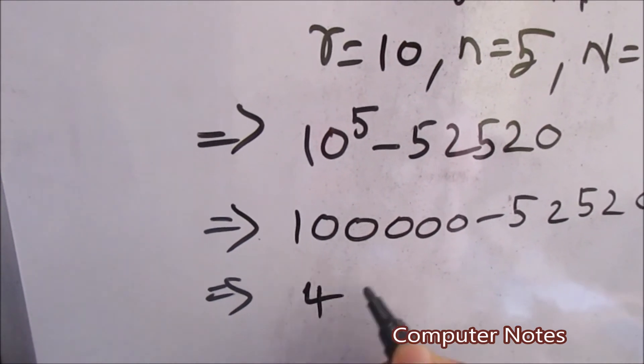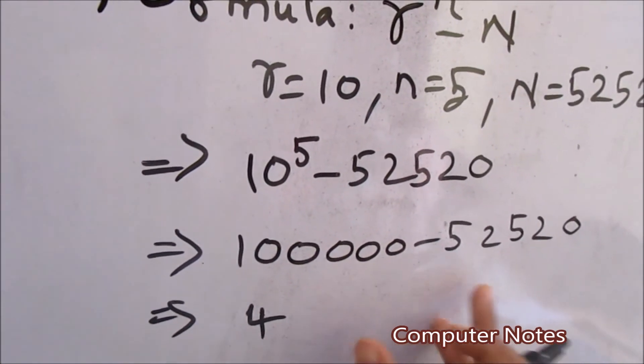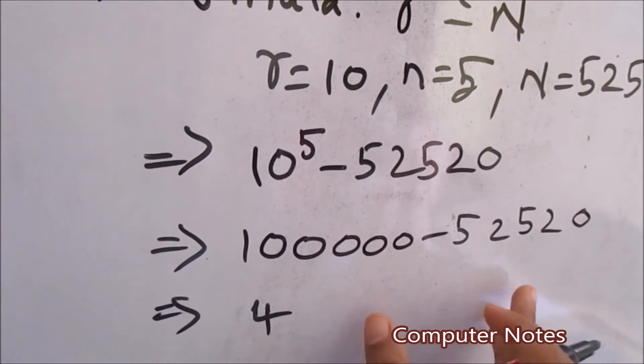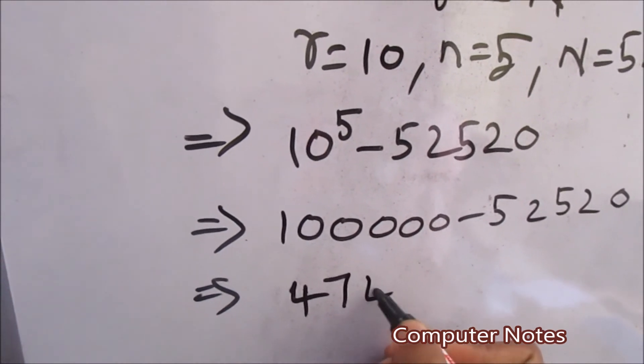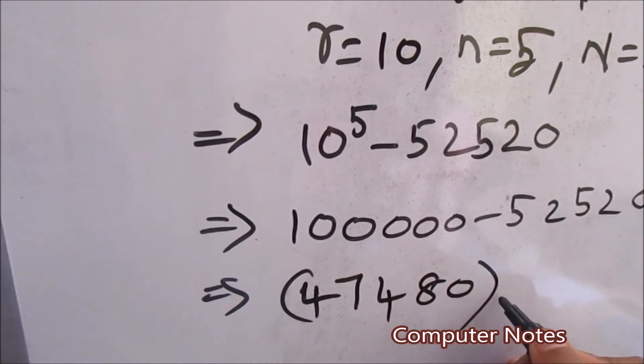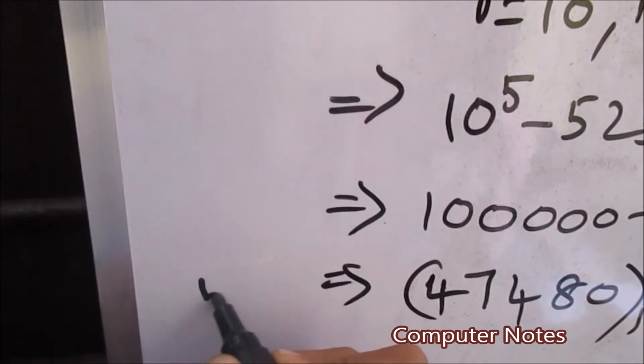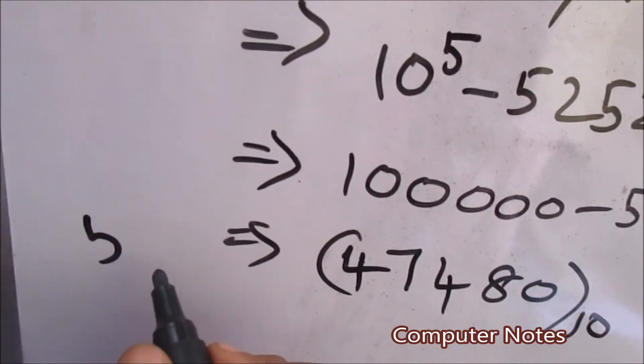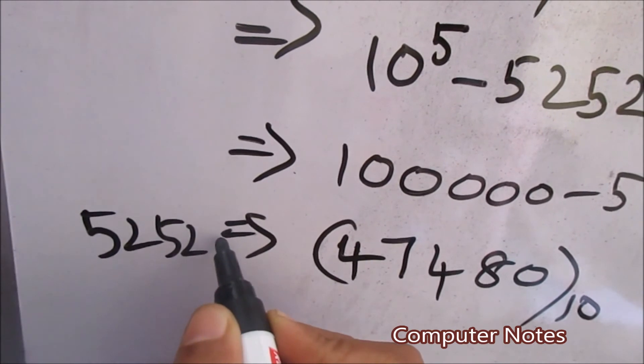So the final value for this answer, for this problem is, after subtracting the normal subtraction only we will be applying here, no binary subtraction, the normal subtraction. That is 47480. That is 47480 with base value of 10. This is the value for 52520 base.